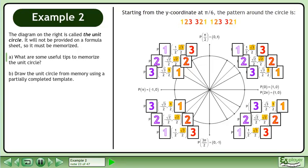Starting from the y-coordinate at π/6, the pattern around the circle is 1, 2, 3, 3, 2, 1, 1, 2, 3, 3, 2, 1.